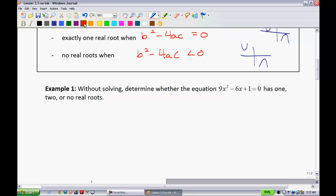Without solving, determine whether the equation 9x squared minus 6x plus 1 equals 0 has 1, 2, or no real roots. So simply, I like to start out with figuring out what my a, b, and c are. Make sure you note that they won't always be in this order. So your a is always whatever the x squared term is. So I'll write a equals 9, b is whatever the x term is, it's negative 6, and c is your integer constant 1.